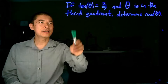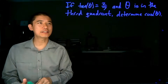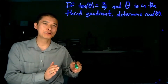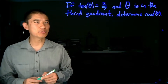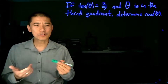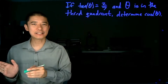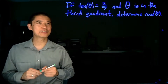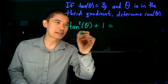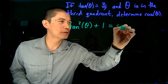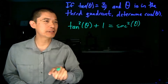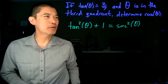Let's do an application: if tangent theta is two-sevenths and theta is in the third quadrant, determine cosine of theta. We can do this with an algebraic approach or a geometric approach. For the algebraic approach, we look at the identities and make substitutions. The first thing to try is the Pythagorean identity: tangent squared theta plus 1 equals secant squared theta. This is useful because secant is 1 over cosine, and we know the value of tangent theta.